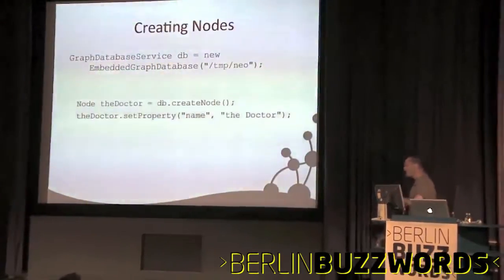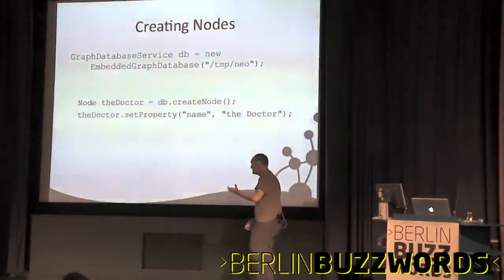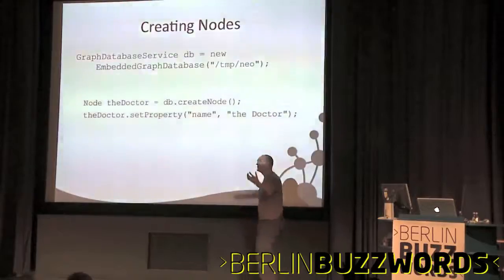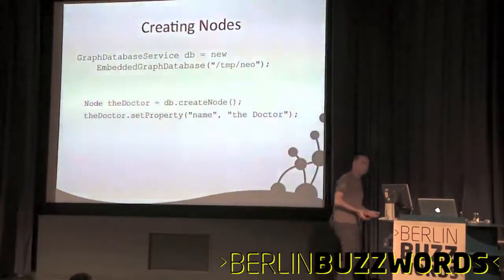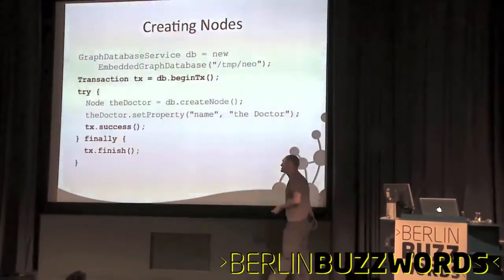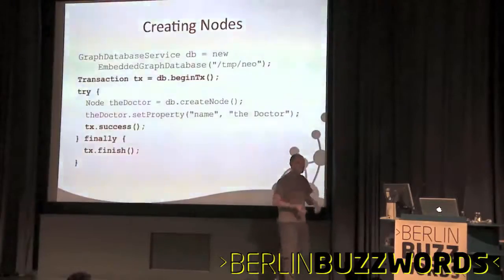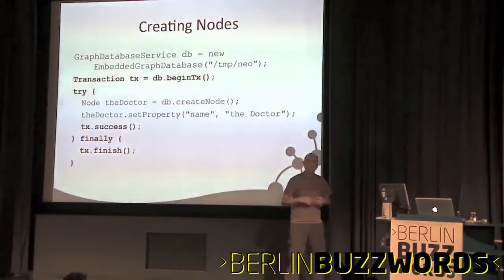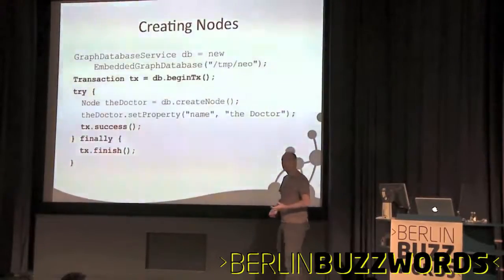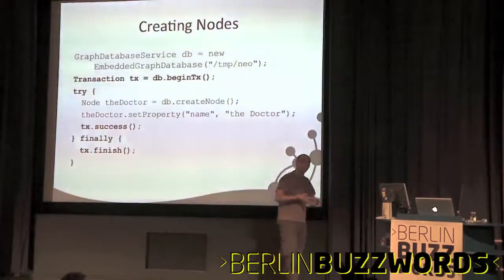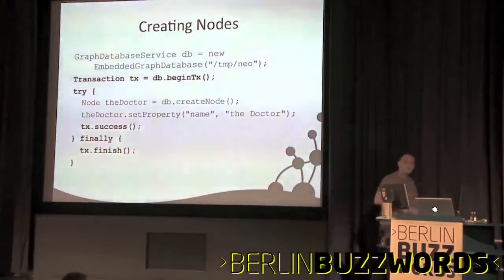In Neo4j, you describe your data in terms of simple, expressive nodes and relationships. You grab a reference to the database, then ask it to create a node. Once you have a node, you can fill that node with stuff - it's a simple key-value pair metaphor. But Neo4j is a bit enterprise-y. Everything you do in Neo4j has to be wrapped in a transaction. Everything is always ACID transactional. Neo4j is not React scalable - you're never going to deploy it on 2,000 machines. You're going to deploy Neo4j on 20 machines, but the scale it addresses is the increasing complexity of data rather than pure volume.